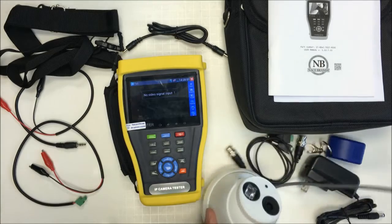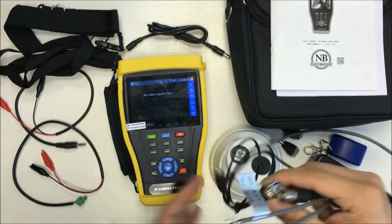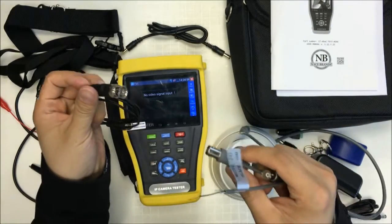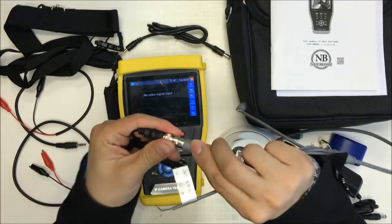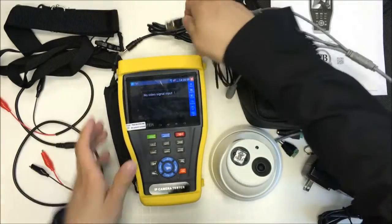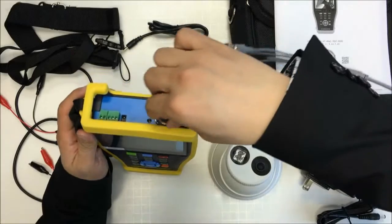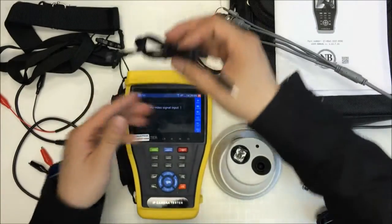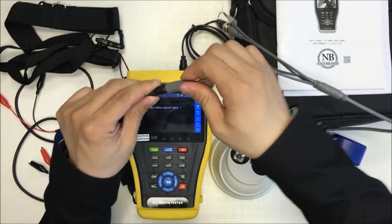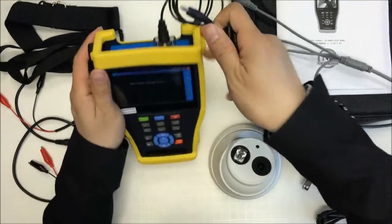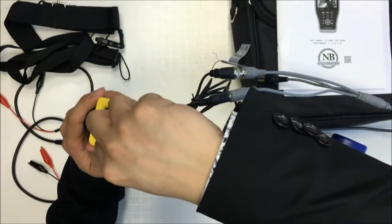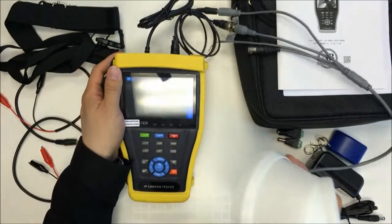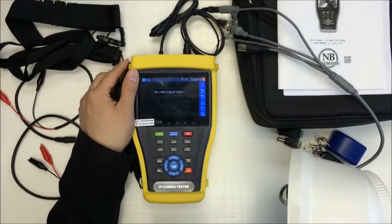I have a TVI camera. It comes with the accessory BNC cable. I will connect the TVI camera to the TVI input. Come with the accessory cable for power.